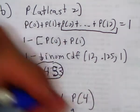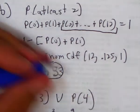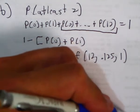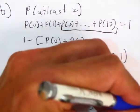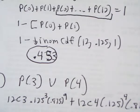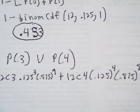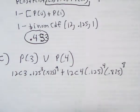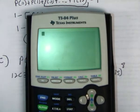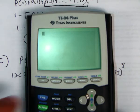plus twelve choose four, 0.125 to the fourth, 0.875 to the eighth. Okay. So that's how that would look. So these are both binomPDF applications. So we're going to do three or four.